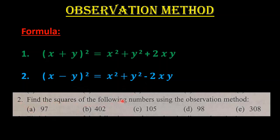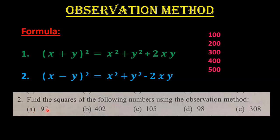From exercise 3.3, question number two asks us to find the square of the following numbers using the observation method: (a) 97, (b) 402, (c) 105, (d) 98, and (e) 308. All these numbers are close to either 100, 200, 300, or 400.